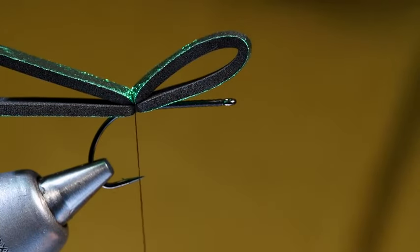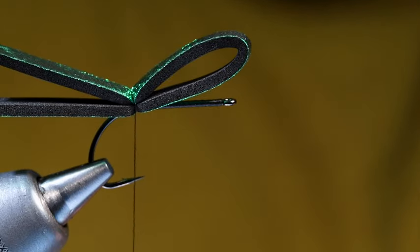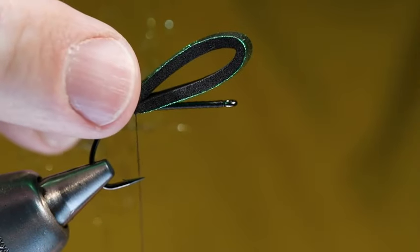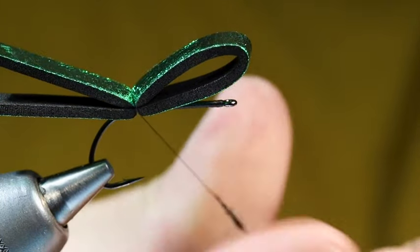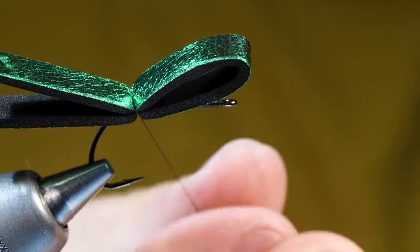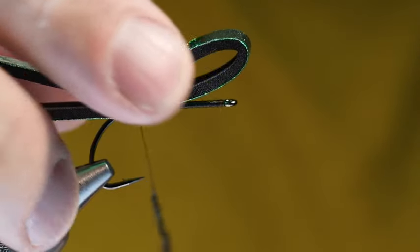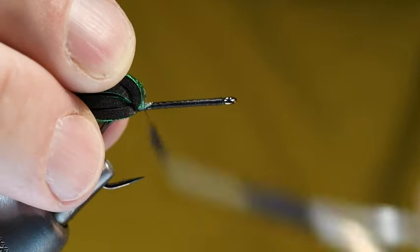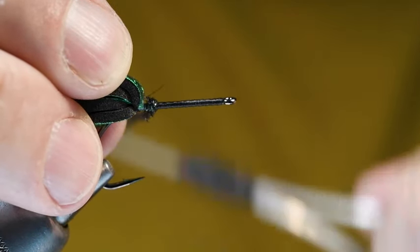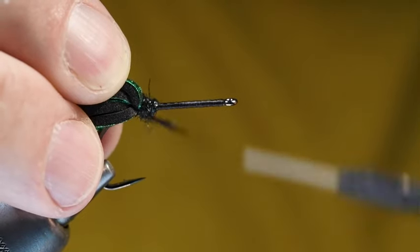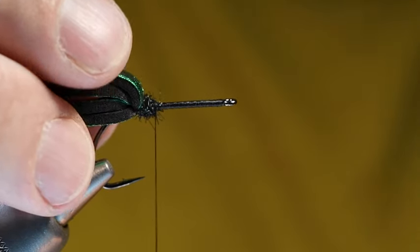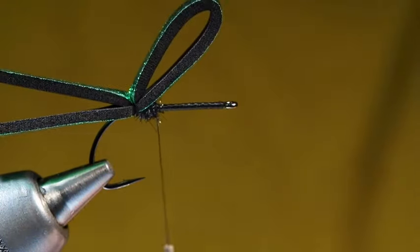Now I'm going to take a little bit of black peacock eye dubbing. It really doesn't take much here. I'm going to dub a tight little strand. I don't need a ton here. We're just going to dub one segment worth at a time. That's going to keep us from building up too much thread bulk where our tie downs are. I'm going to pull that foam back out of the way. I'm going to move the thread forward about 20 to 25% of the hook shank and build a little ball there. Then I want to end with the thread right at the front edge of that dubbing.